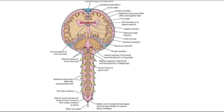The brain and spinal cord are suspended in a fluid called cerebrospinal fluid. In the diagram, the pink-colored portion is filled with this cerebrospinal fluid. This fluid is not present within the nervous tissue or brain tissue itself.